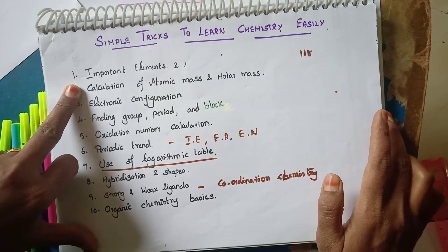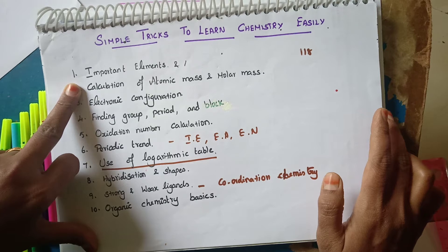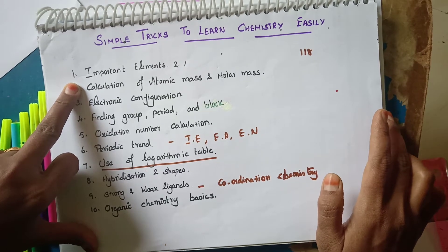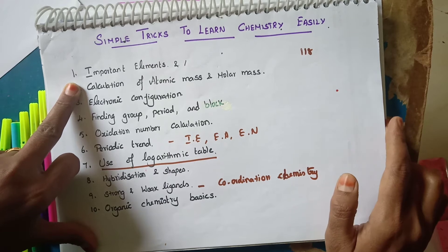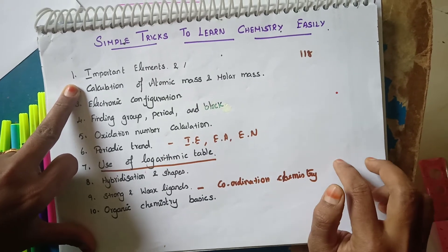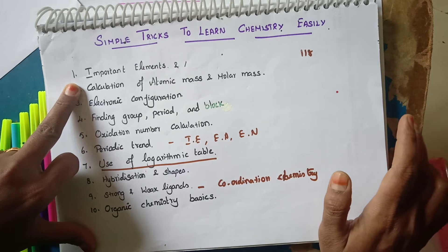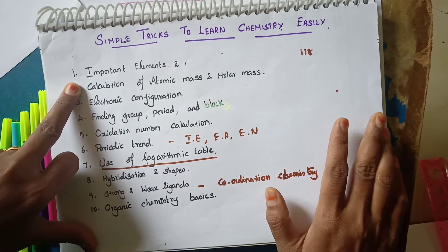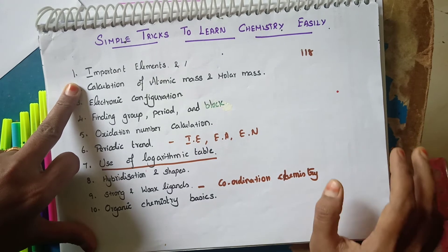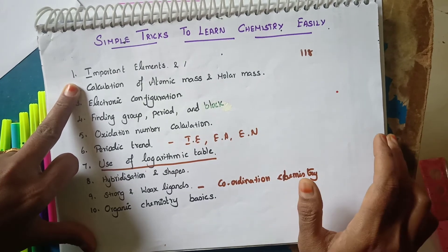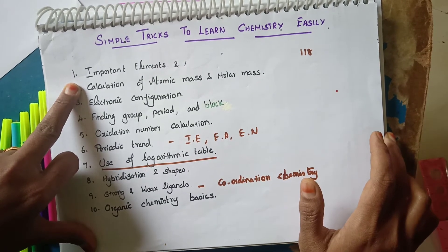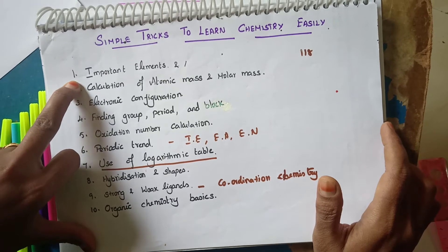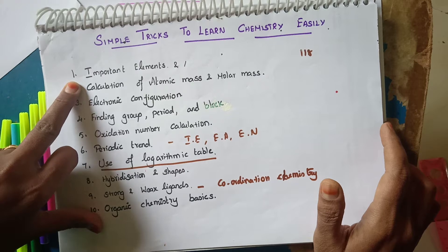The first basic is important elements. The periodic table immediately comes to mind — it has 118 elements. Do we need to learn all 118 elements at once? Definitely not. Initially, you only need to know some key elements, because without those you cannot approach chemistry further.